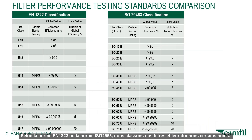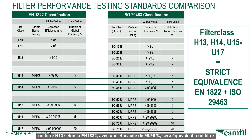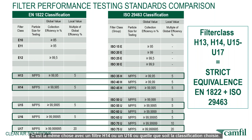According to EN1822 or ISO 29463, we classify our filters and give them certain names. Looking at the comparison, a H13 filter according to EN1822, which is 99.95% efficient, would be equivalent to an ISO 35H according to ISO 29463. These are both efficiencies at the MPPS. The same applies to H14, U16, or whatever classification you want to use.